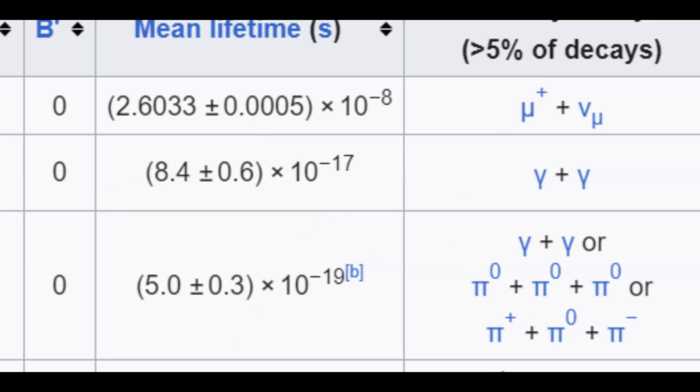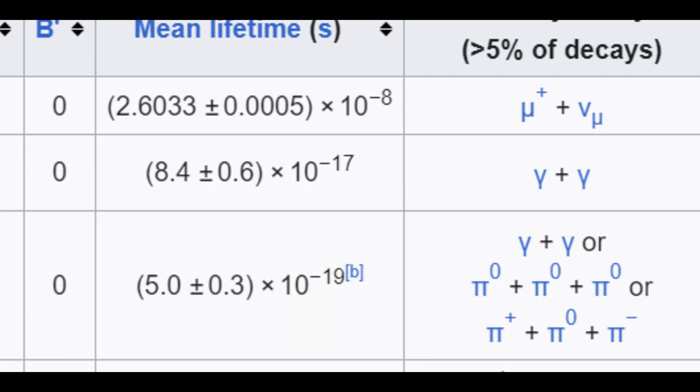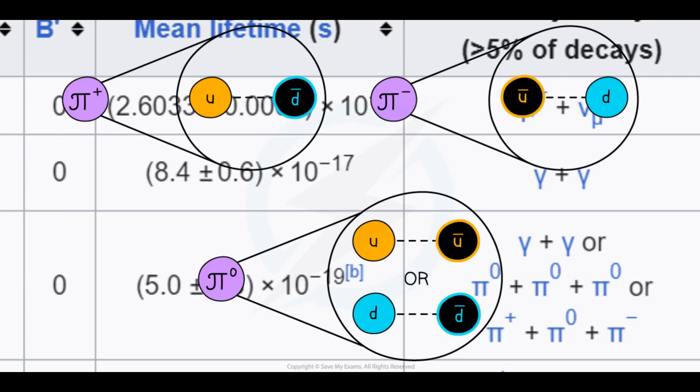The case is a bit different for the neutral pions since they are made of the same kind of quarks. For example, a neutral pion is a superposition state of u u bar and d d bar.